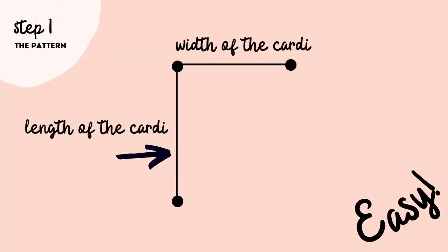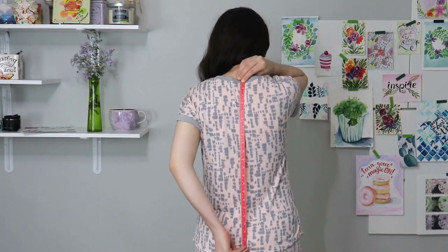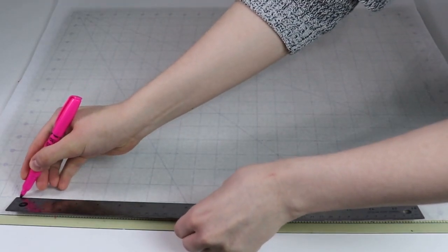We are going to start with two simple measurements for this pattern—one for the length of the garment, the other for the width. For the length of the garment, grab your measuring tape, position it on the center back neckline, and drop it as long as you would like it to be. Record that measurement.